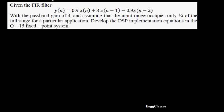The task is: an FIR filter is given with a difference equation y(n) = 0.9·x(n) + 3·x(n−1) − 0.9·x(n−2), with a passband gain of 4, assuming that the input range occupies only one-fourth of the full range for a particular application. Develop the DSP implementation equations in the Q15 fixed-point format.